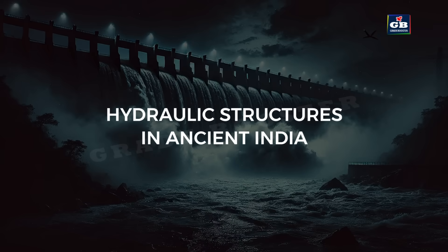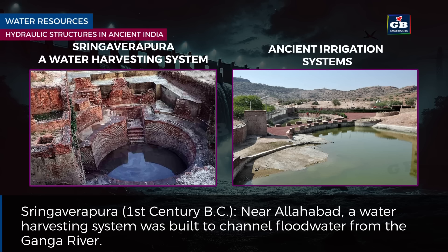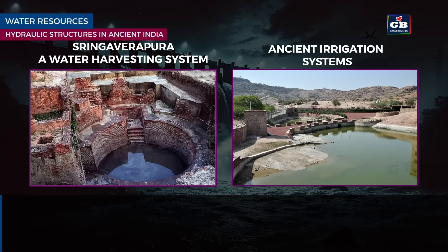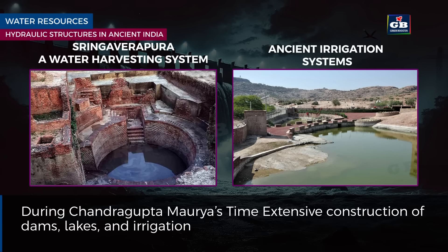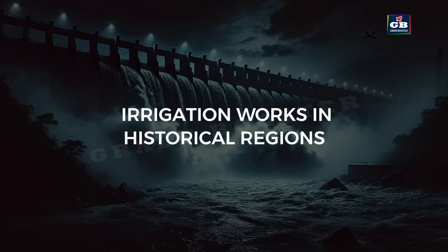Hydraulic structures in ancient India. Sringaverapura, 1st century BC, near Allahabad, had a water harvesting system built to channel flood water from the Ganga river. During Chandragupta Maurya's time, extensive construction of dams, lakes and irrigation systems for water management was carried out.